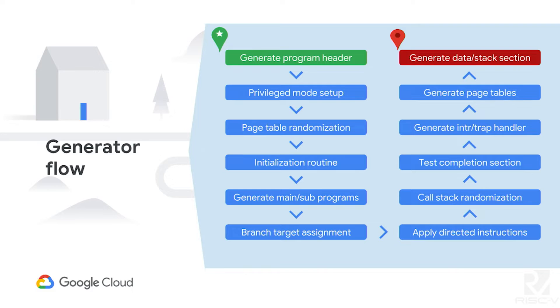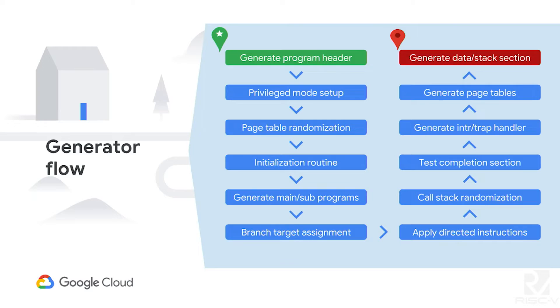Here's our flow. We start by generating the program header, then set up the privilege mode — whether user mode, machine mode, or supervisor mode — which is randomized. Then we randomize the page tables with multi-level entries and varying numbers of page table entries. Then we do the initialization and generate all the sub-programs, assign branch targets for already-generated branch instructions, and mix in directed instructions, which is very important because not everything will happen randomly. After all instructions are ready, we generate the call stack, test completion, and all types of interrupt handling. Finally, we generate the page table entries in memory, followed by the data and stack sections.